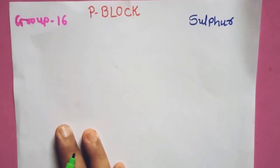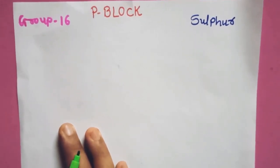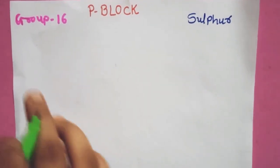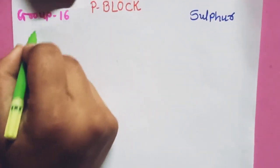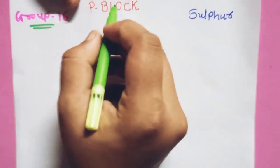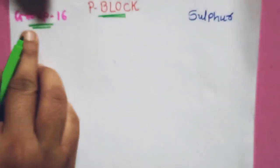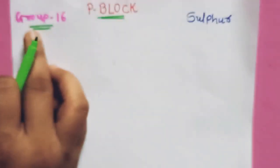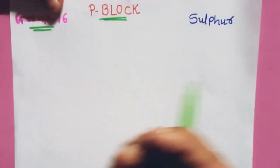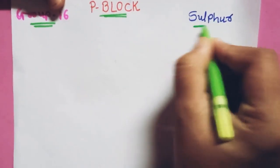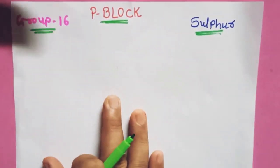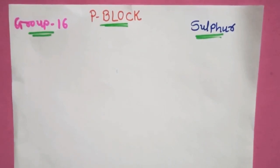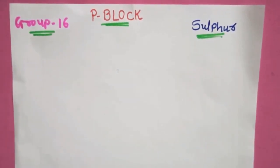Hello friends, I'm Krishna Naiyat, chemistry teacher. We are studying the p-block elements, and in that we are discussing about the Group 16 elements. We already completed oxygen in the last lecture. Today we are going to start sulfur, and we have to study its compounds and properties one by one.